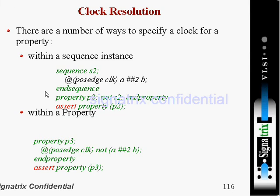Now we'll see how we can use a clock within a property directly. Here the property name is p3, and inside that we are using the clock 'clk': not of a, after two clock cycles, b. So now we are using the clock inside a property itself.